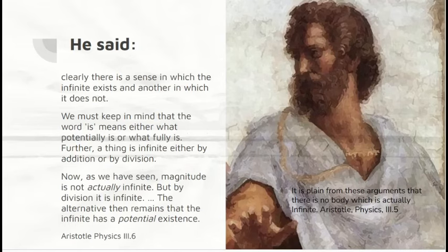I'm quoting Aristotle here. Clearly, there is a sense in which the infinite exists and another in which it does not. We must keep in mind that the word 'is' means either what potentially is or what fully is. Further, a thing is infinite either by addition or by division. Now, as we have seen, magnitude is not actually infinite, but in division it is infinite. The alternative then remains that the infinite has a potential existence.